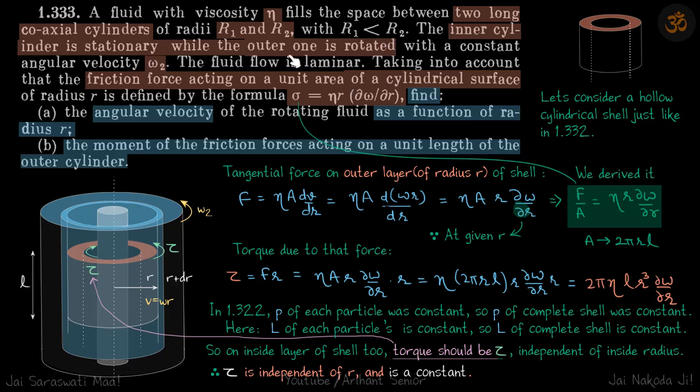The inner cylinder is stationary while the outer one is rotated with omega 2. So inner is stationary, outer is rotated with omega 2.